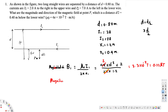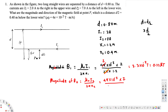Now let's find the magnitude of B2 — the magnetic field caused by the i2 current. Using the same formula: B2 = μ₀·i2 / (2π·x2) = 4π × 10⁻⁷ × 7 divided by 2π × 0.4. Calculating this gives 35 × 10⁻⁷ tesla, which is 3.5 microtesla.